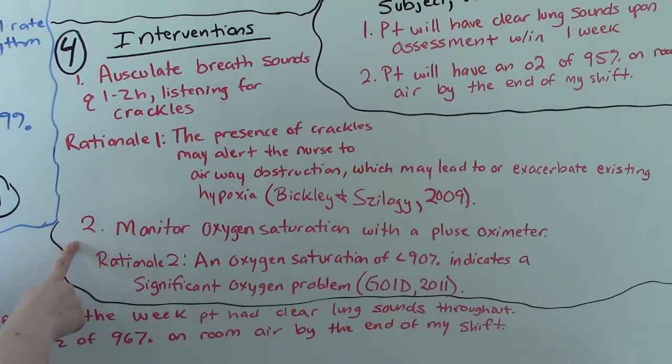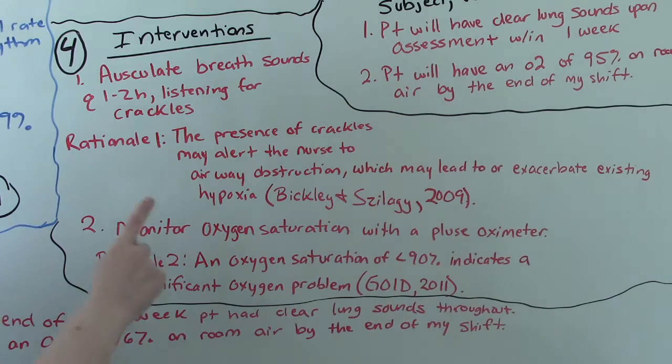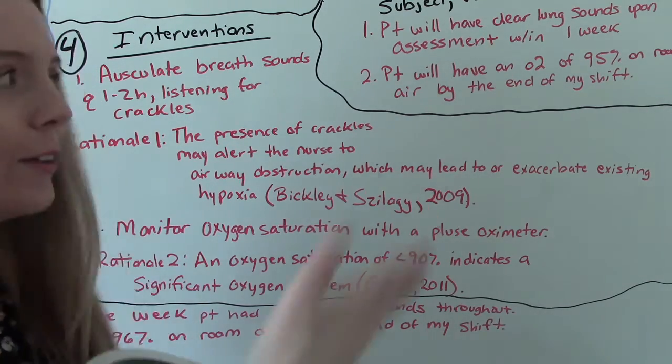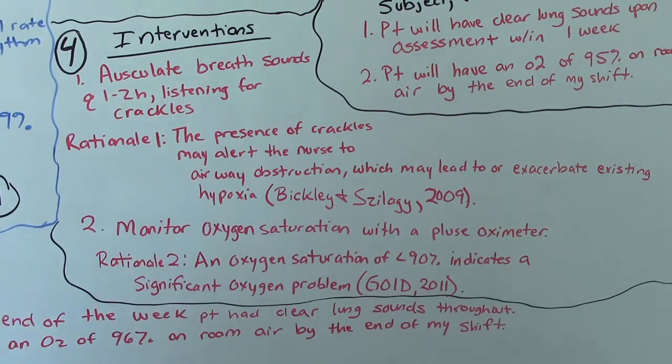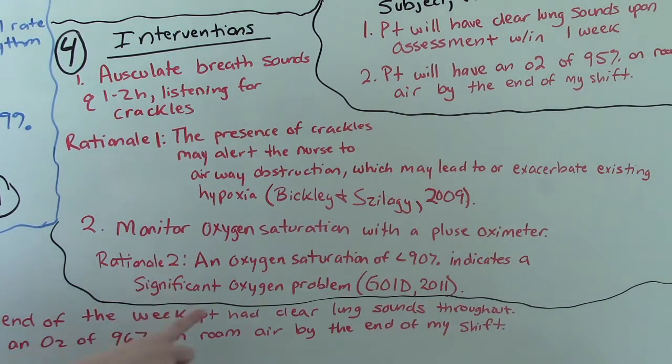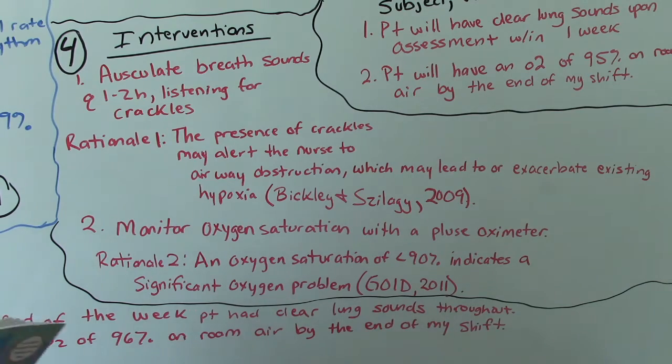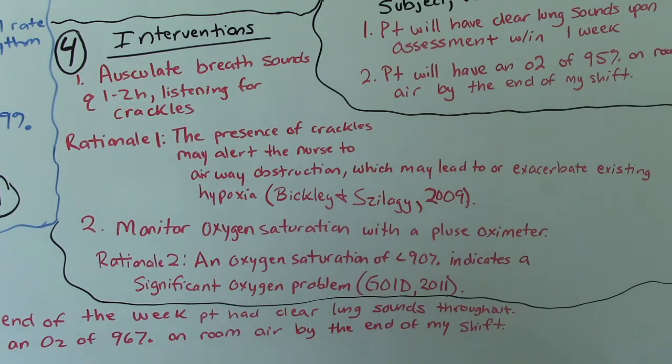Our second intervention has to do with our O2, because that's what we've been talking about this whole time. So we're going to monitor oxygen saturation with their pulse oximeter, because how are we going to know if they've met our goal of getting over 95% if we're not actually measuring it? So our rationale for this one is an oxygen saturation of less than 90% indicates a significant oxygen problem. And then I cited that as well. And all of this is using your book. So once you learn how to use this book, it's going to be a big help.